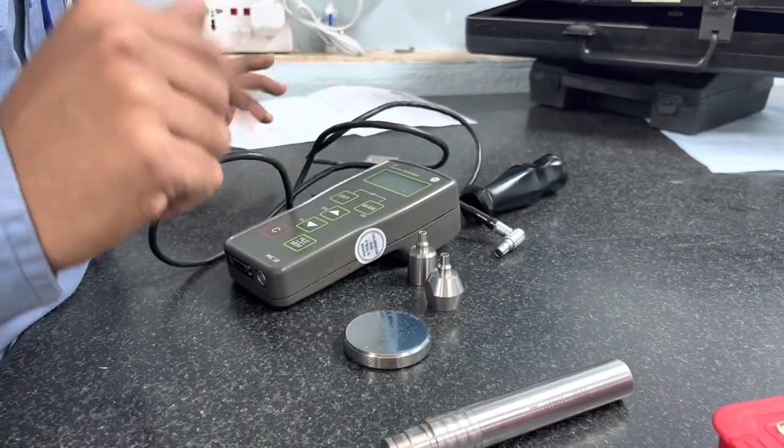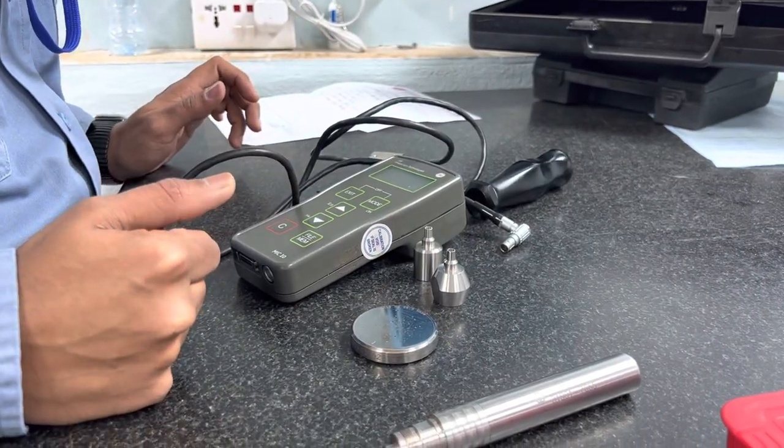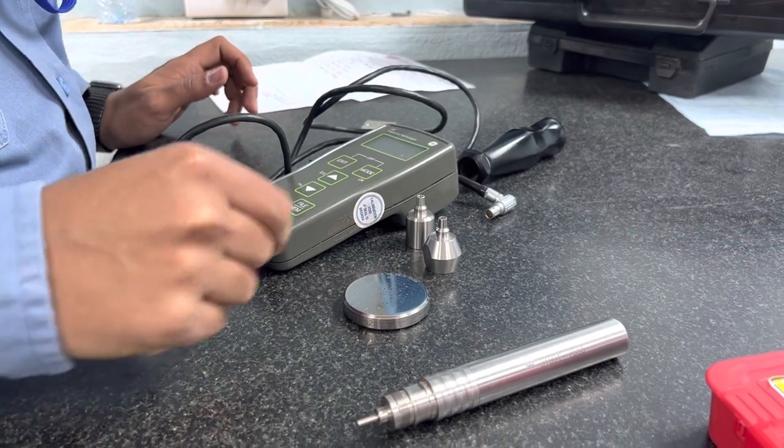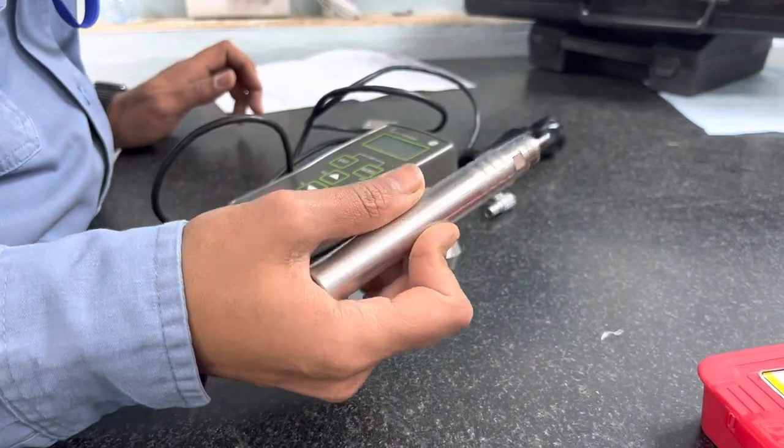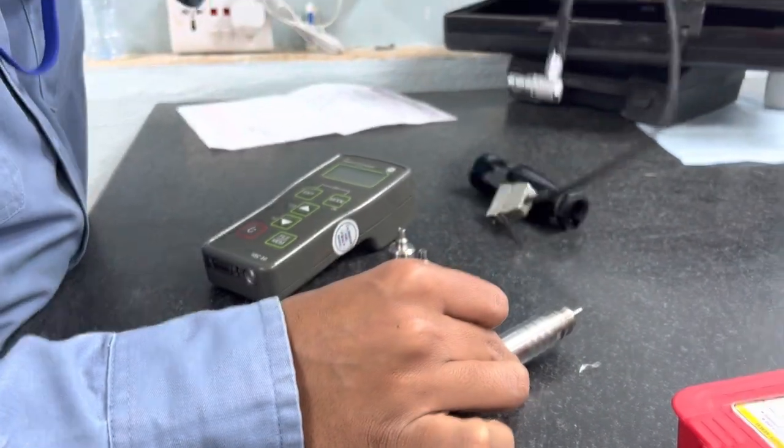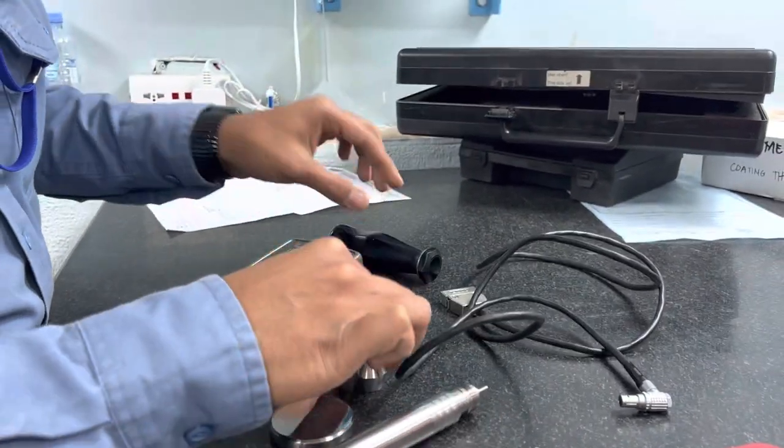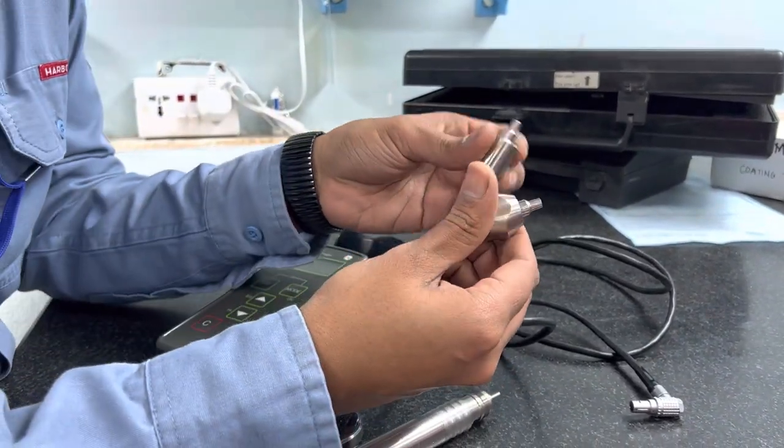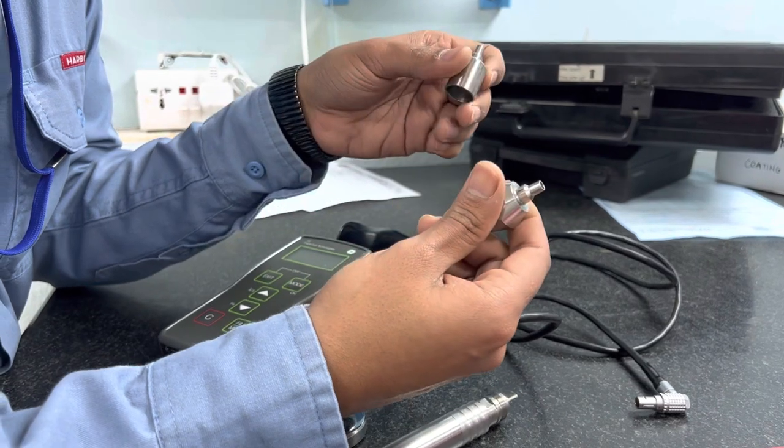Today I will show you how to calibrate a MIC 10 machine. We have a probe, cable, handle, and two adapters. These two adapters are for different purposes, and I will explain one by one how to do that.